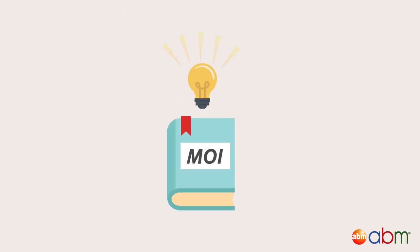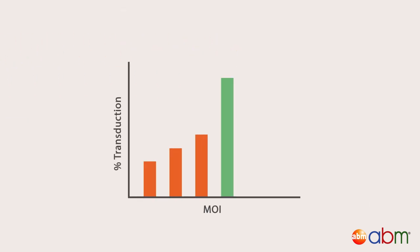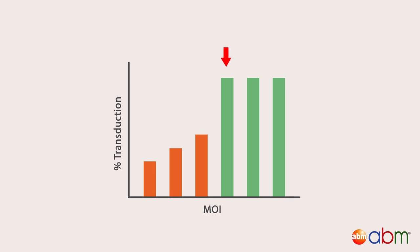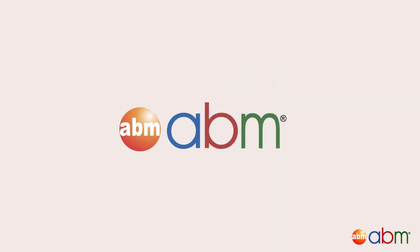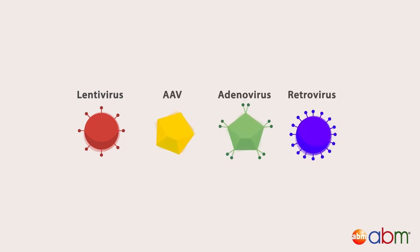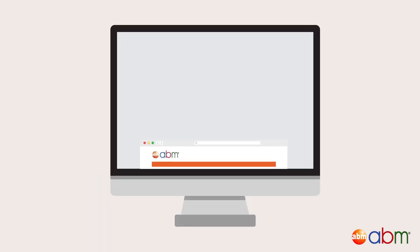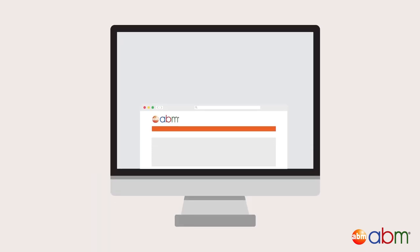We hope you found this video helpful in determining the optimal conditions for transduction of your virus to your target cells. At ABM, we offer a ready-to-use collection of lenti, AAV, adeno, and retroviruses for any human, mouse, and rat gene. Browse our collection of tools and resources for gene expression today.